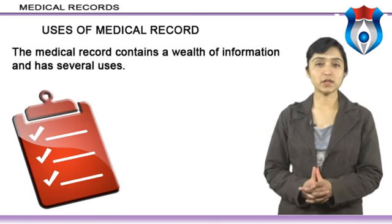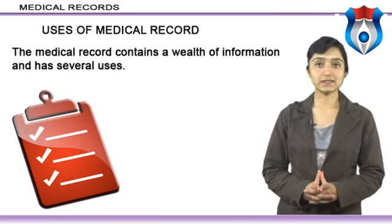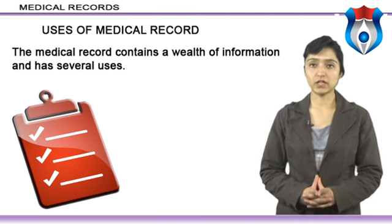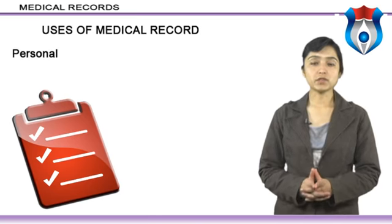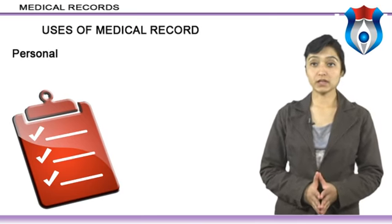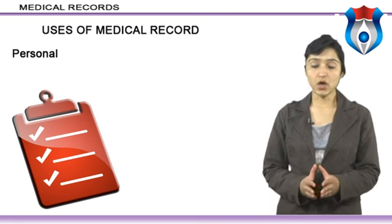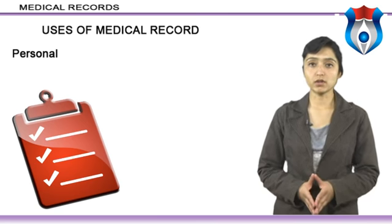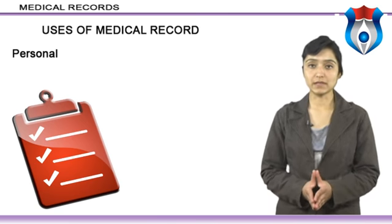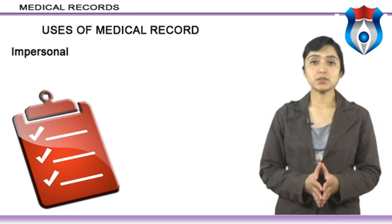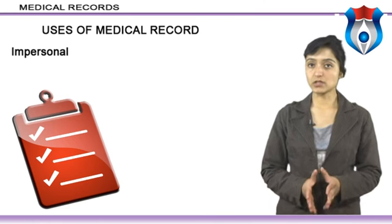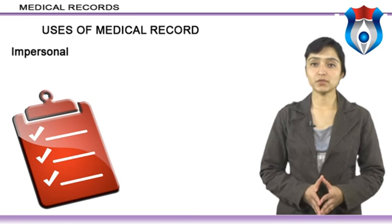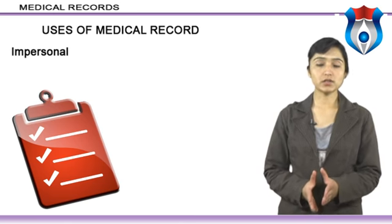Let us now discuss uses of medical records. The medical record contains a wealth of information and has several uses. The uses of medical records are of two major types: personal and impersonal. Personal use refers to when the identity of the patient is needed and retained. For example, a request for copies of specific portions of a patient's medical record by the insurance company for reimbursement claims. Impersonal use refers to when the patient's identity is not required and is therefore not retained — for example, the use of data from a large number of medical records for a research study or clinical trials.